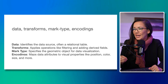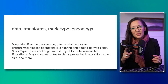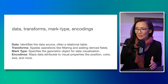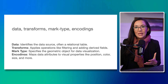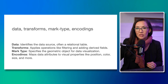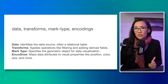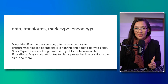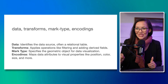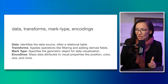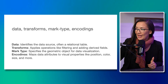Mark types specify the geometric object of a data visualization, and this is important because it is different from the encoding. Essentially, a mark type is the physical element that is going to be drawn in the visualization itself. This can include bars, circles, lines, area — the physical attribute. Encoding, in contrast, maps data attributes to visual properties like position, color, size, and more.